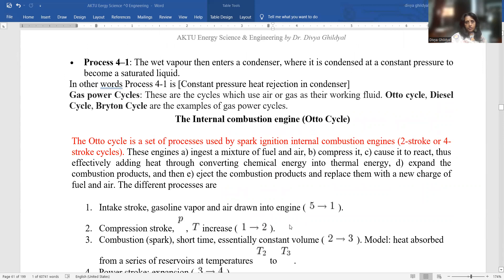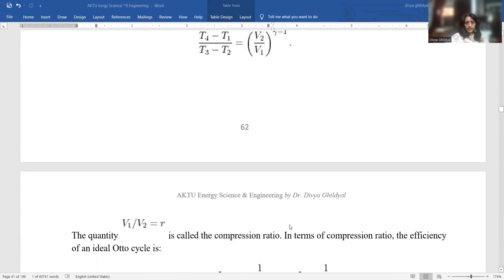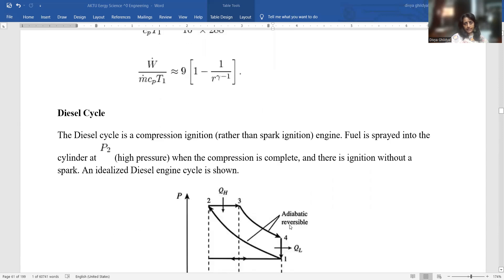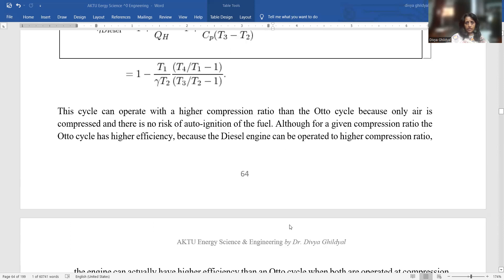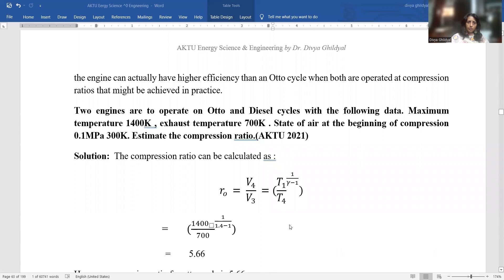Otto cycle is a set of processes used by spark ignition internal combustion engines that can be two-stroke or four-stroke. The other one is your Diesel cycle, which is compression ignition rather than spark ignition. This numerical was asked in your AKTU exam: two engines are to operate on Otto and Diesel cycle. Maximum temperature is 1400 Kelvin, exhaust temperature is 700 Kelvin. State of air at the beginning of compression is 0.1 at 300 Kelvin. Estimate the compression ratio. Compression ratio is given by T1 upon 1 minus gamma minus 1, 1 upon gamma minus 1 divided by T4. T1 has been given as 1400 Kelvin, T4 has been given as 700 Kelvin, and gamma is 1.4 minus 1.